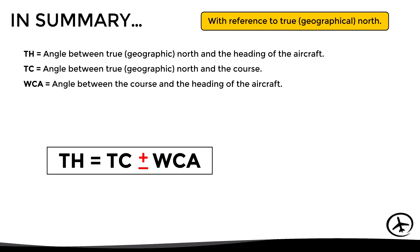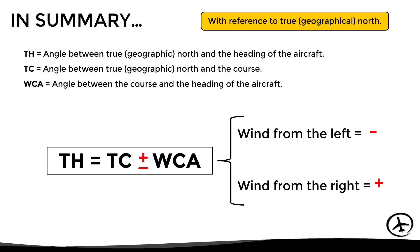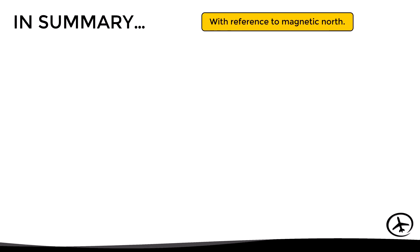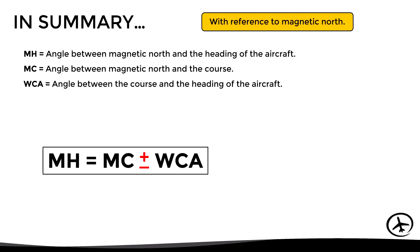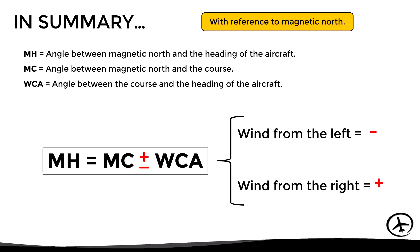In summary, if we are using true north as reference, the true heading equals the true course plus or minus the wind correction angle. If the wind comes from the left the WCA is negative; if from the right, it is positive. If using magnetic north as reference, the magnetic heading equals the magnetic course plus or minus the wind correction angle, with the same sign convention.